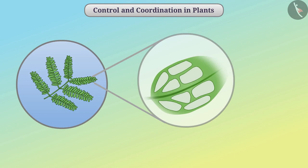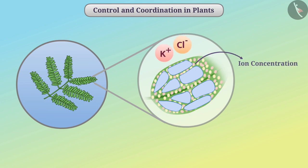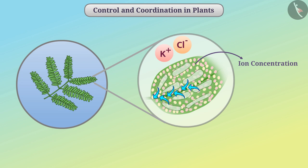The cells of the leaves of the mimosa plant are filled with water. The shape of cells is maintained by water pressure, and due to this the leaves remain open. When the plant detects touch, it releases certain chemicals like potassium and chloride ions. Increased ion concentration outside the cell reduces the difference between the concentration of ions within and outside the cells. Water gets transported to the outside of the cell through the process of osmosis, causing contraction of cells, so the leaves get closed.